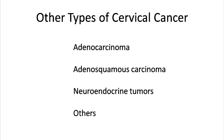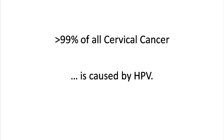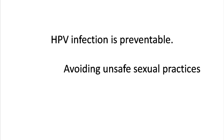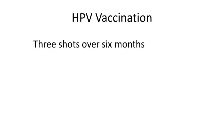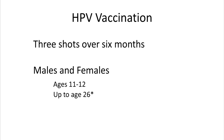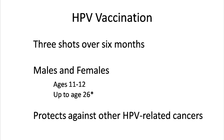Although there are other types of cervical cancer, over 99% of cervical cancers are caused by the human papillomavirus. HPV infection is preventable. Avoiding unsafe sexual practices and getting the HPV vaccine are proven methods for preventing transmission of HPV. HPV vaccination involves three shots over the course of six months. Routine vaccination is recommended for both males and females at age 11 or 12. Young men and women who have not received the HPV vaccine when younger may be able to receive it up to age 21 or 26. The HPV vaccine also protects against other types of HPV-related cancers.